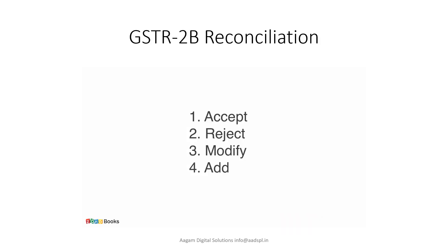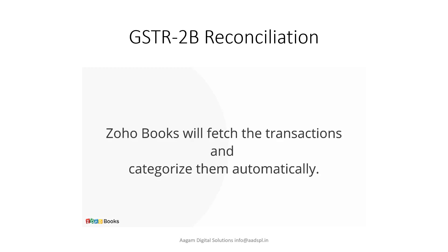There are four steps for each type of transaction. Either we have to accept, reject, modify, or add. So after pulling the data from the GST portal, Zoho Books categorizes them automatically into the categories previously seen.